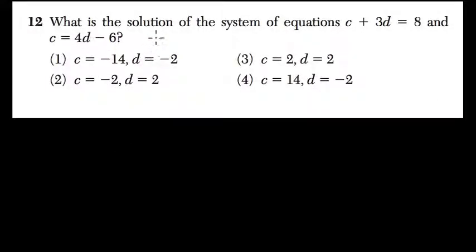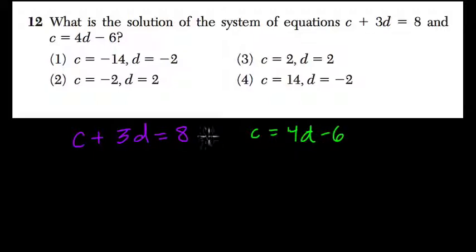Here they ask, what is the solution of the system of equations c plus 3d equals 8 and c equals 4d minus 6? Well, that means what they want us to do is use these two equations to solve for two variables. Because if you have two variables, you need two equations to figure out what those variables are, right? You need that much information to figure it out.